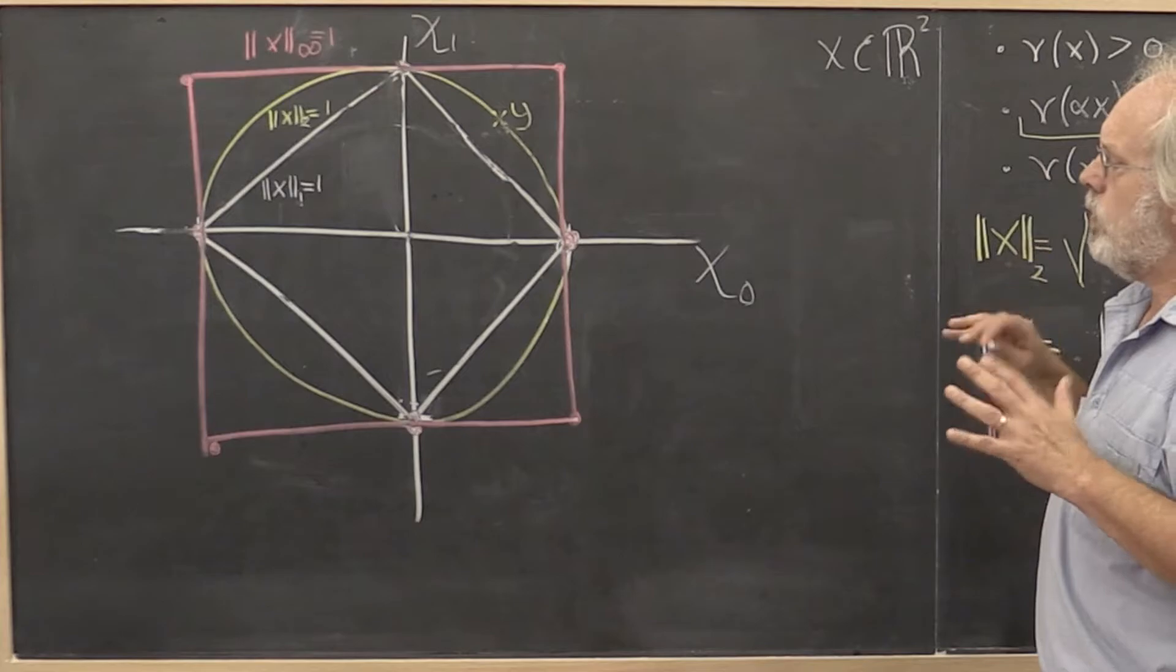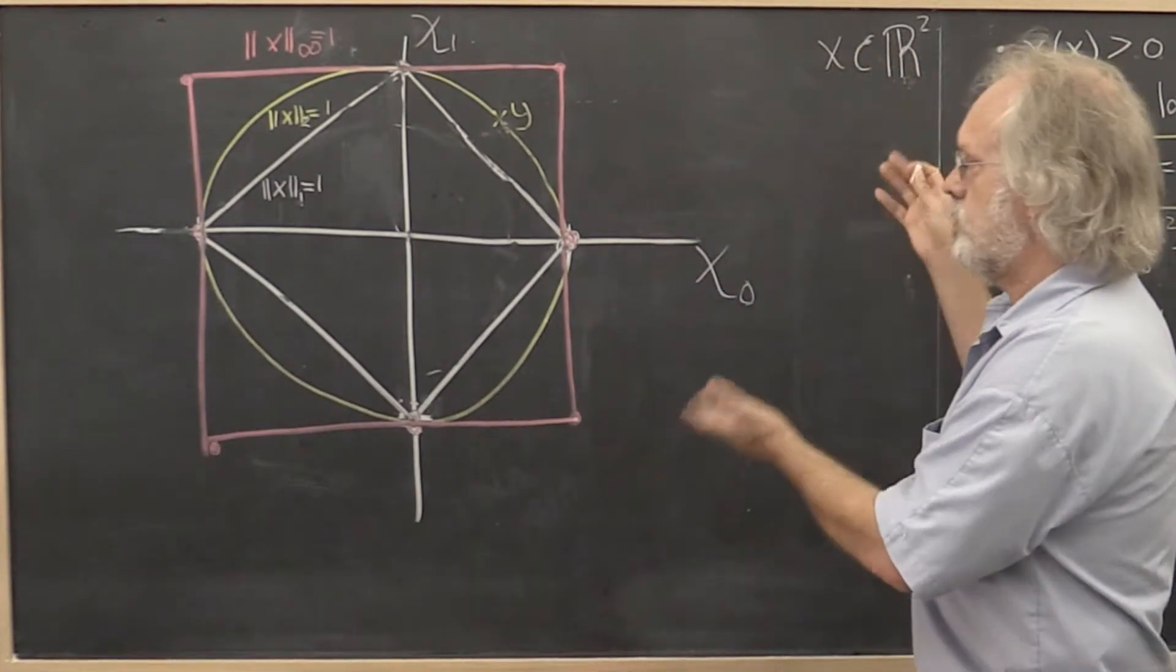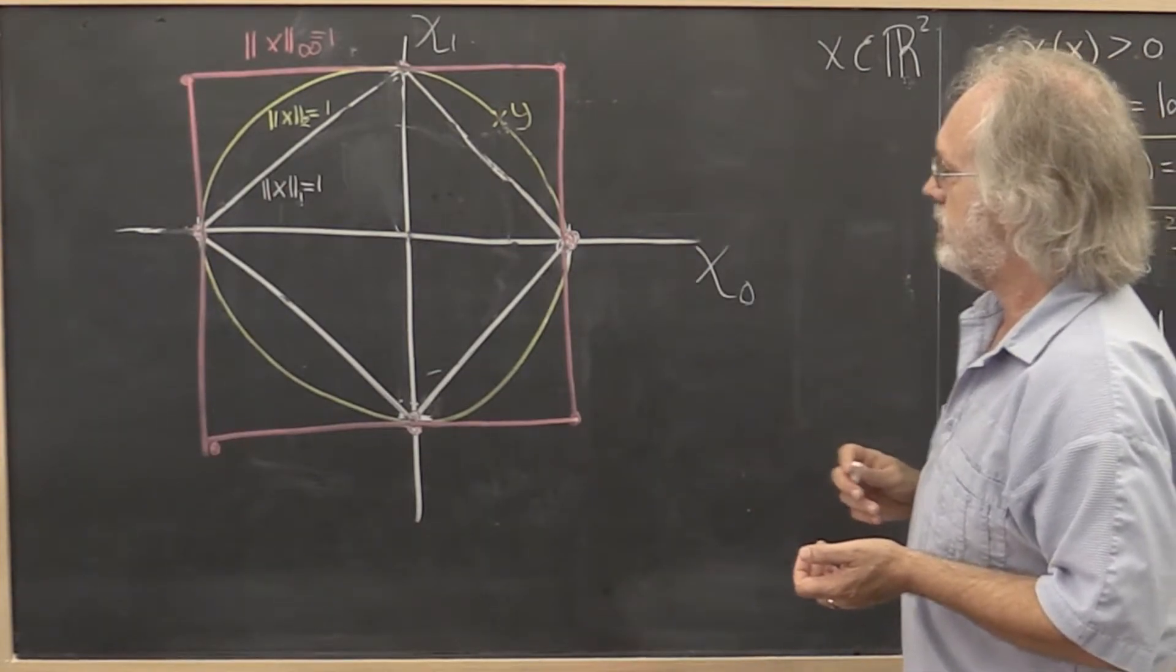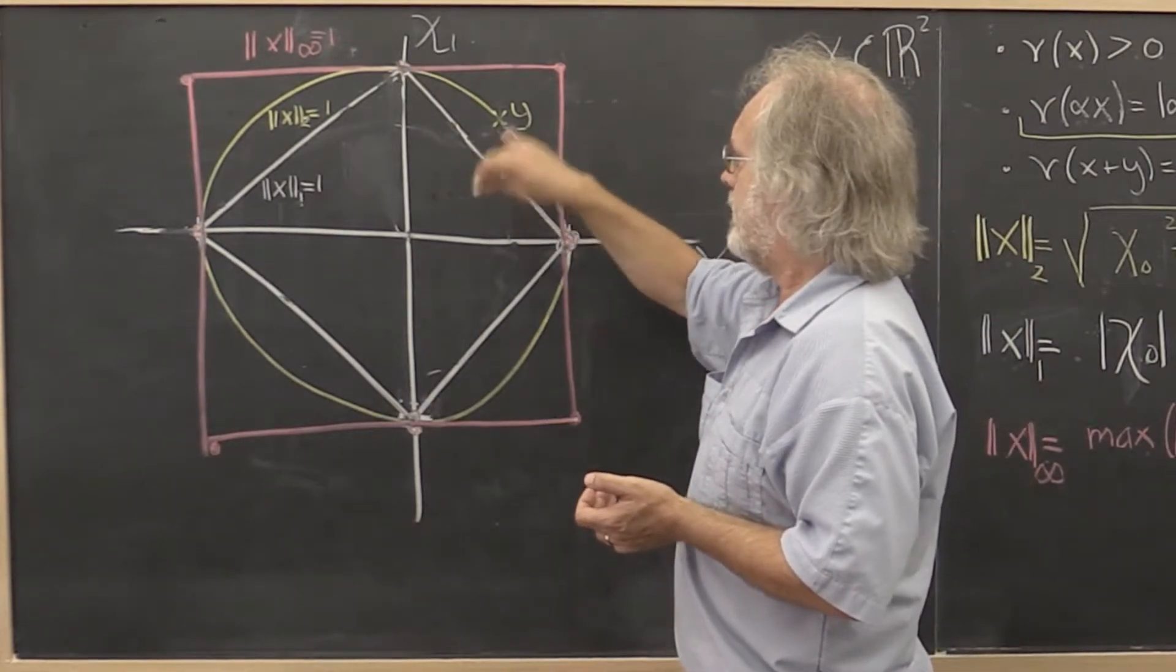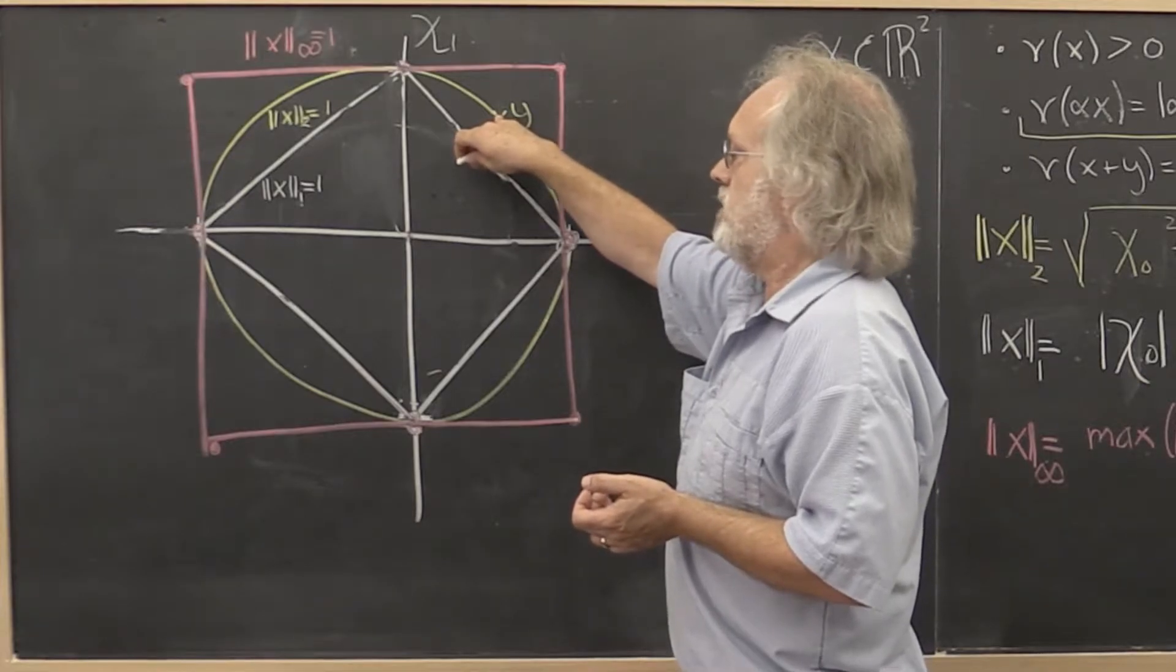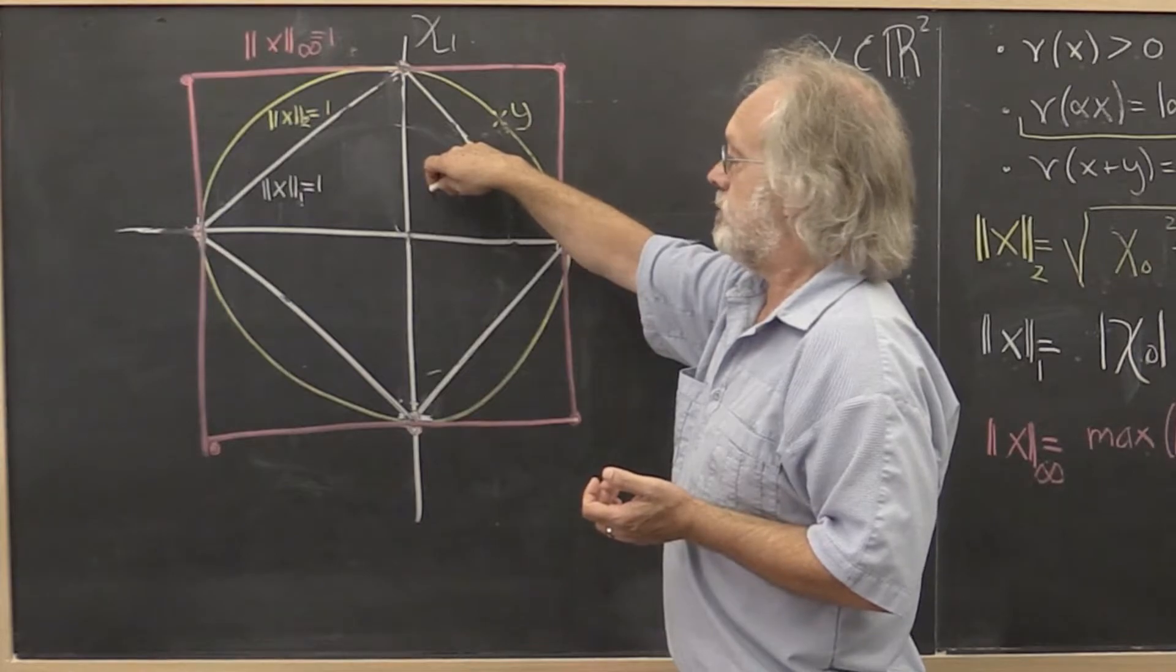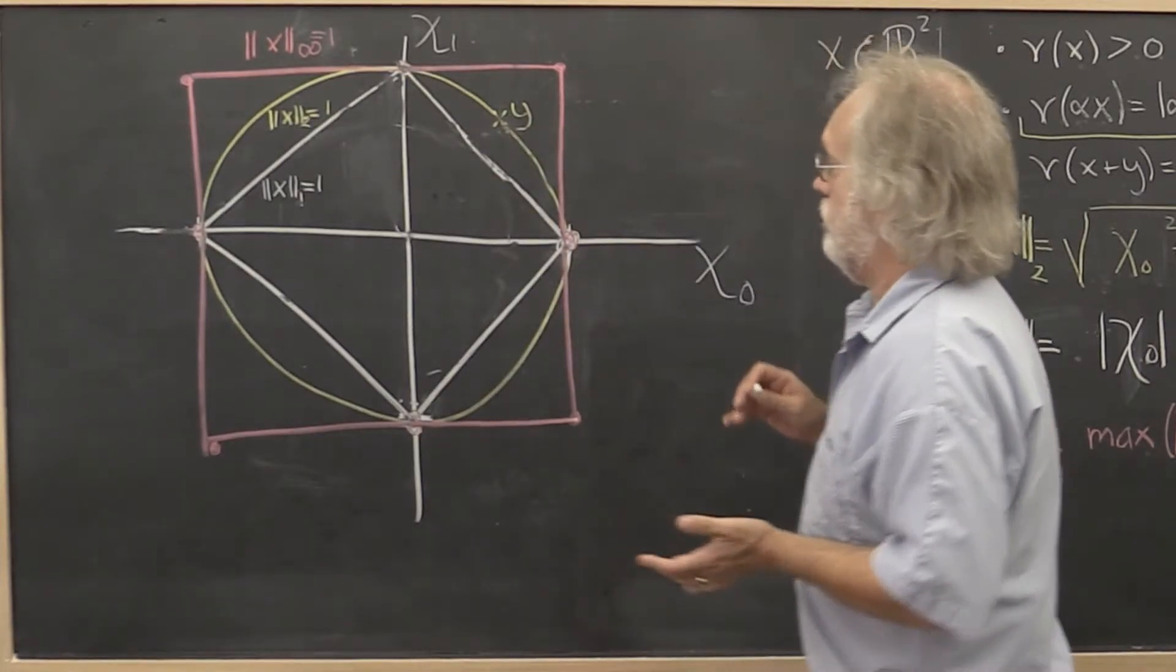And what we would like to be able to say is, at least for this case where we're working in two-dimensional space with real valued vectors, is it the case that a vector in the 2 norm is always less in length than the same vector in the 1 norm? And how can we reason through that?